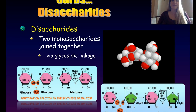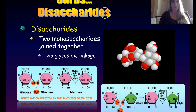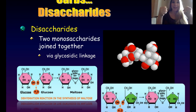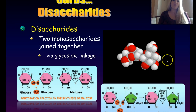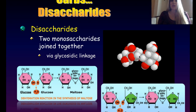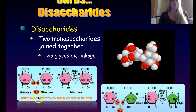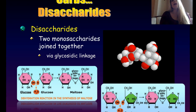Let's talk disaccharides. 'Di' means two, and saccharides means sugar, so a disaccharide is simply when you take two monosaccharides and stick them together. You can look at the space-filled model and see the individual monosaccharides and how they're joined together. We join monosaccharides using a dehydration synthesis reaction — we take a hydroxyl group off one and a hydrogen off the other to make water.